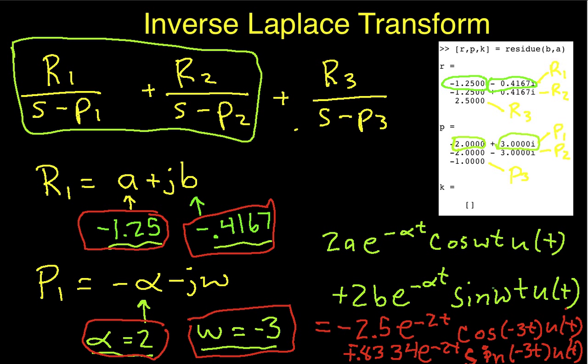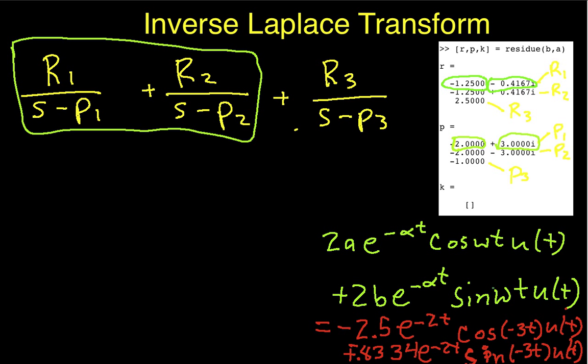So, to make some space, I'll get rid of these guys now. And there's a few last things we need to do to tidy up. So, we'll continue up here. And we'll say that this is minus 2.5 e to the minus 2t. The cosine of a negative number is the same as the cosine of the number. So, I can write this as cosine of 3t u of t. That's because cosine is an even function.